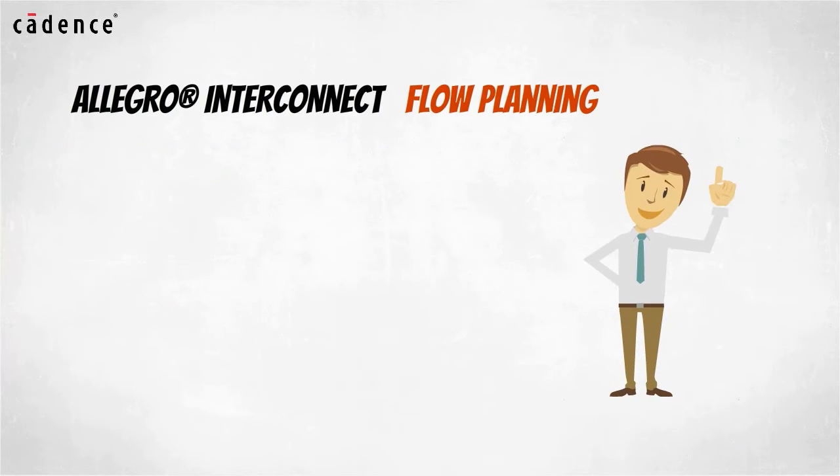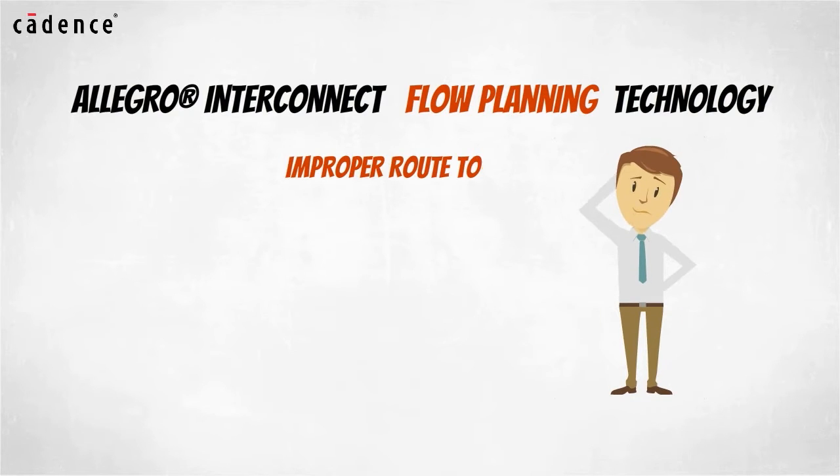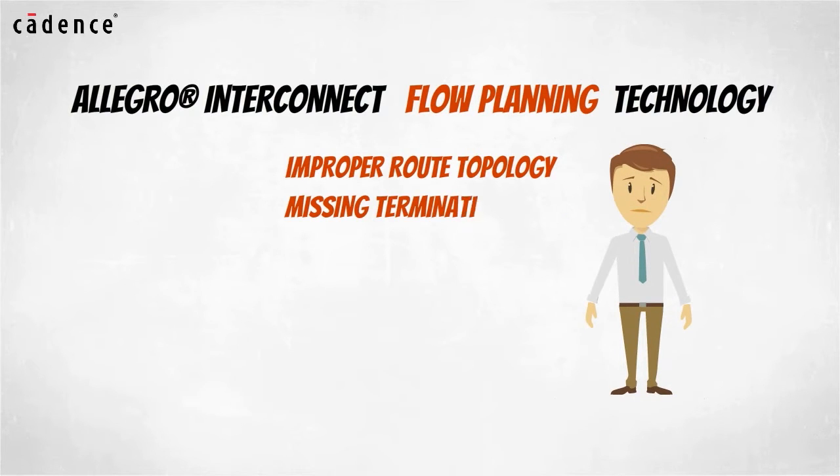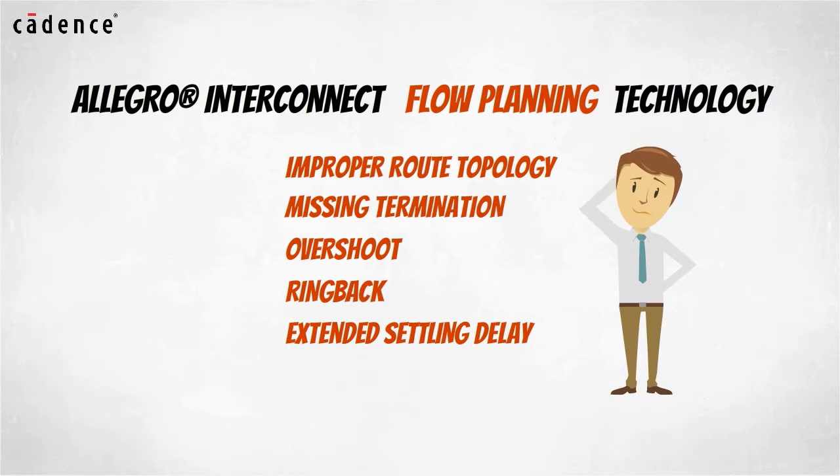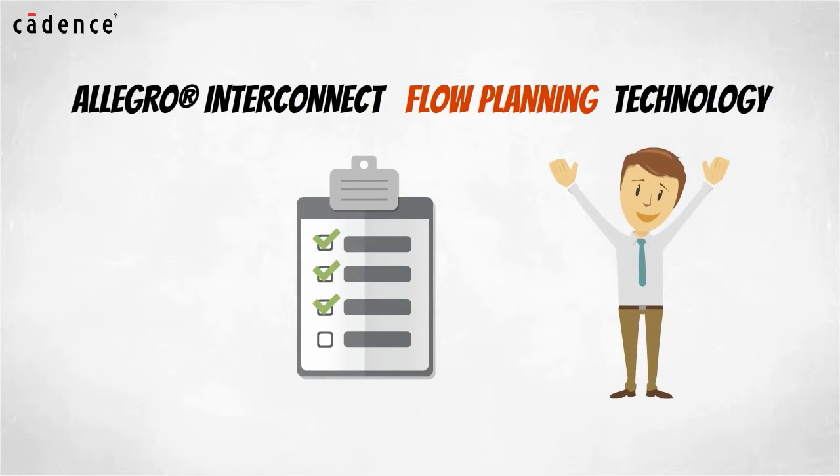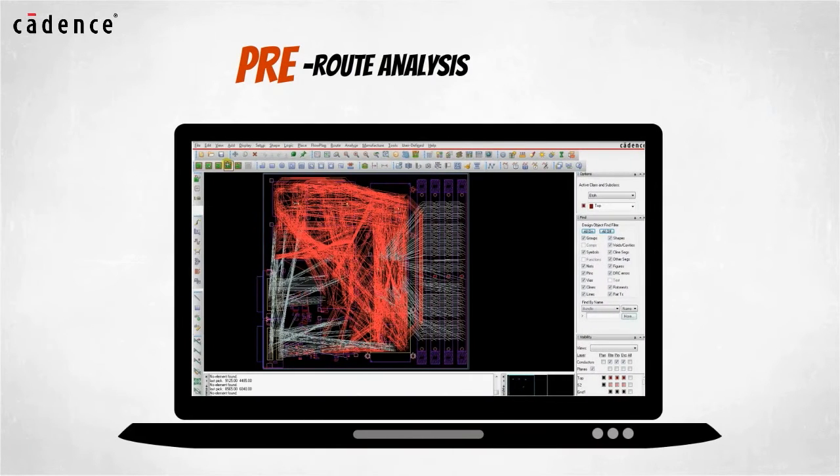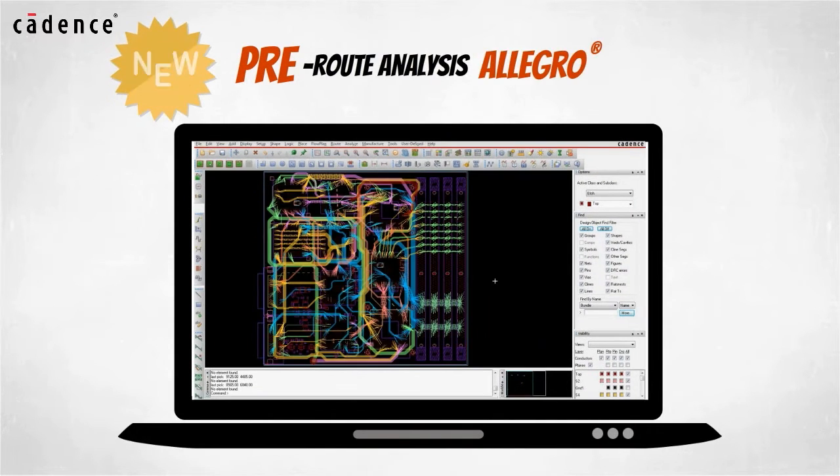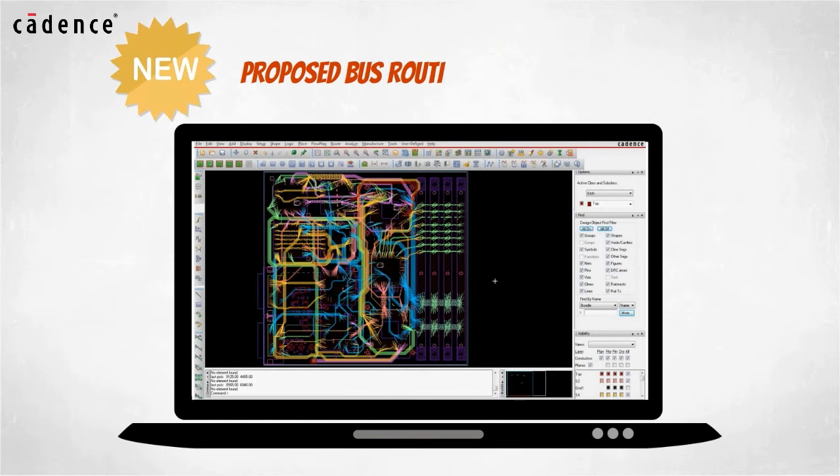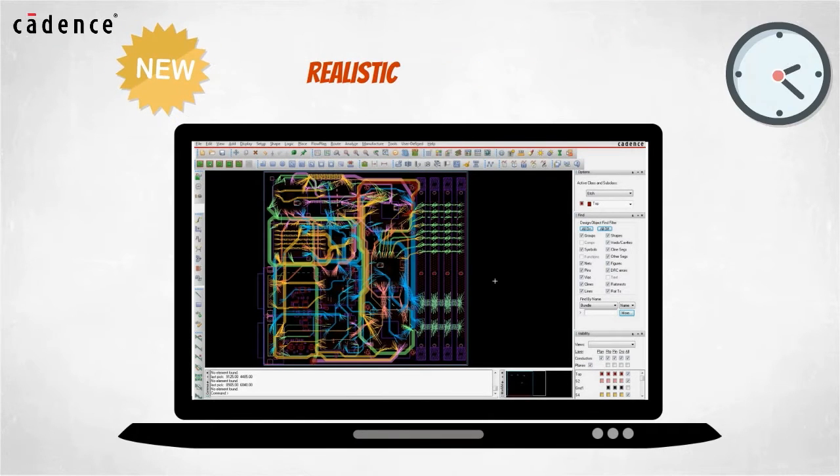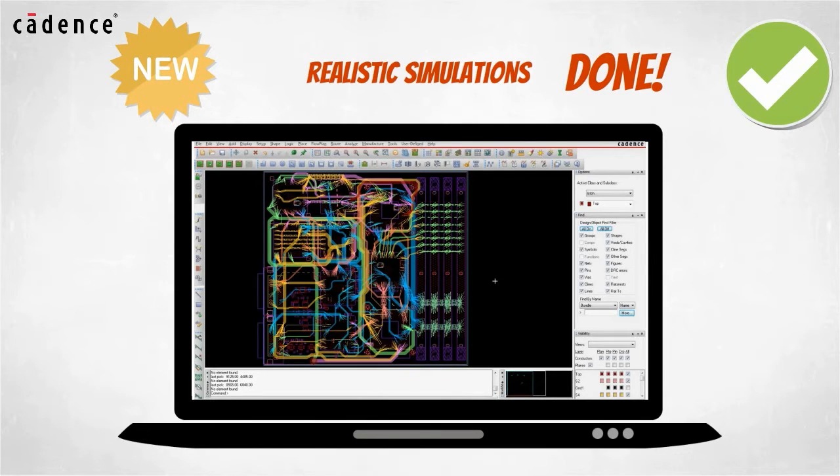Using the Allegro Interconnect flow planning technology, issues such as improper route topology, missing termination, overshoot, ringback, and extended settling delays can be quickly identified and resolved. Since the pre-route analysis uses transmission line lengths based on the Allegro component placement and the proposed bus routing topologies, realistic simulations can be run very quickly at this stage before routing of the PCB even gets started.